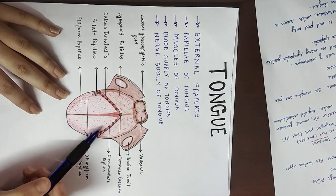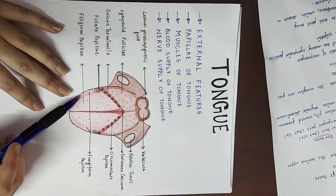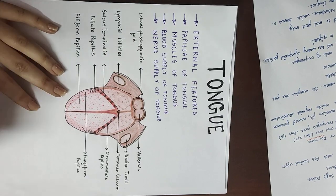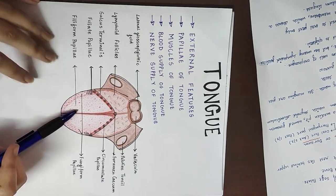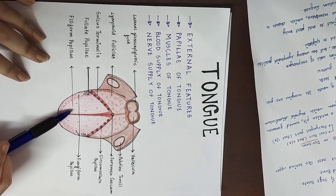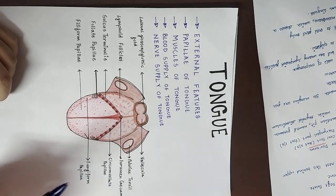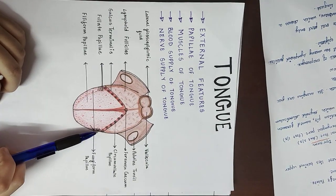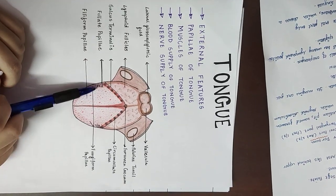Fungiform papillae are also present on the dorsum. The third type is the filiform papillae, which are the smallest papillae. They provide a roughness or velvet appearance to the tongue surface. The fourth type is the foliate papillae, which are folds of mucous membrane present on the sides of the tongue, on both sides.